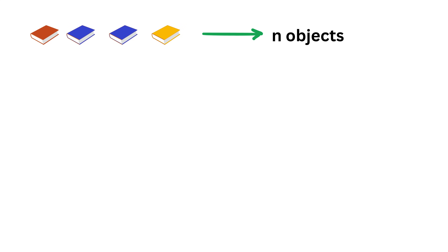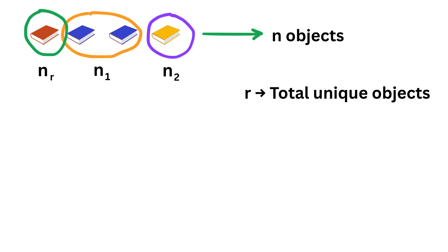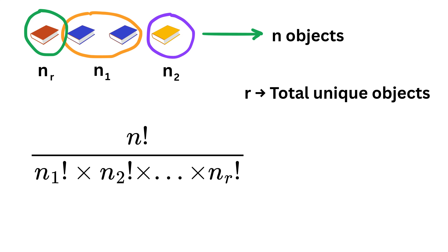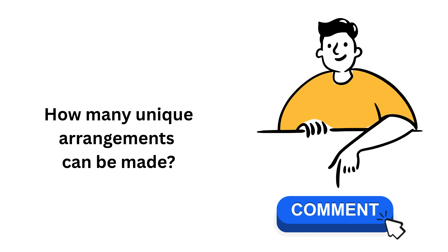In general, if there are N objects of which N1 are identical, N2 are identical, and so on until NR, where R is the total number of unique objects, this formula gives the total number of different permutations possible. Now, let me know in the comments how many unique arrangements can be made using the letters of the word BALLOON.